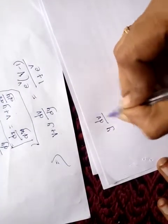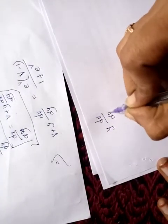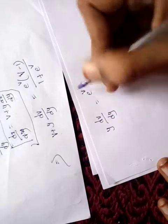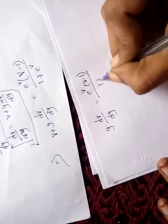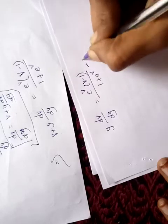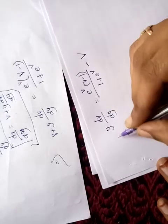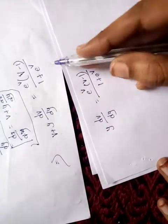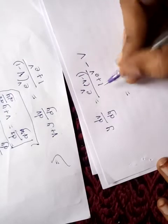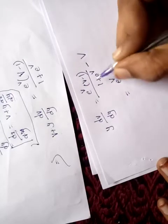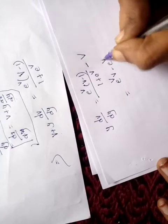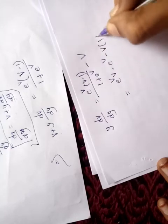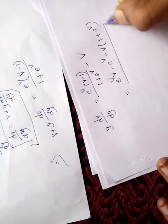Taking LCM: y*dv/dy = [e^v*(v-1) - v*(1 + e^v)] / (1 + e^v) = [ve^v - e^v - v - v*e^v] / (1 + e^v).